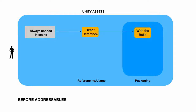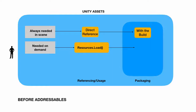Second, if certain assets are needed on demand — like special effects which we might not always need but only in certain conditions — we put them in the Resources directory and use Resources.Load to load and instantiate them. While packaging, these also have to be within the build.